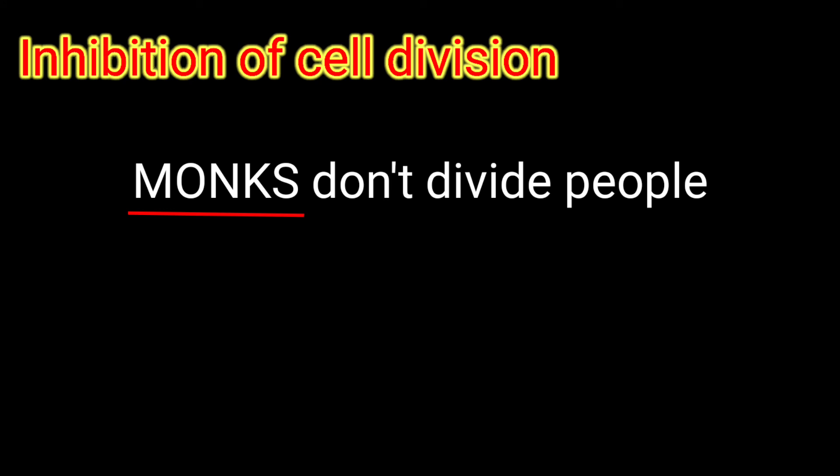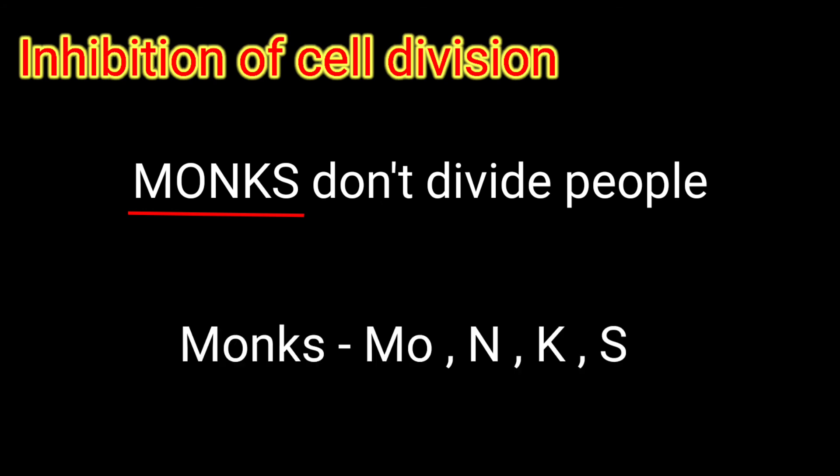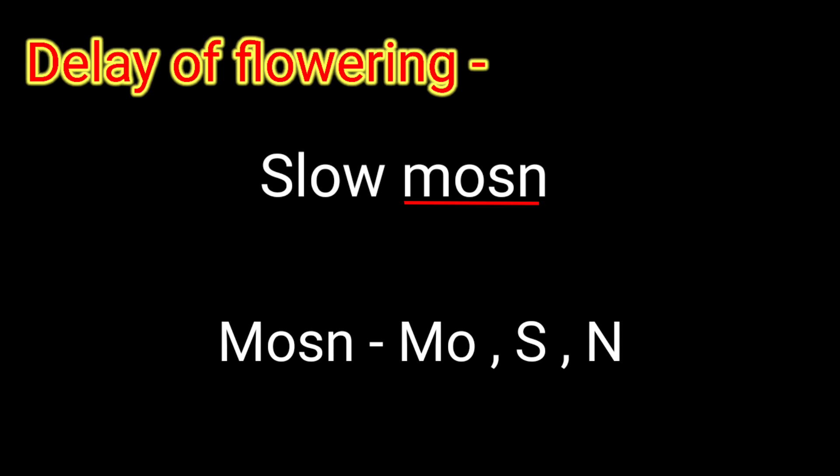Inhibition of cell division occurs due to the deficiency of molybdenum, nitrogen, potassium and sulfur. The trick is: 'Monks don't divide people.' In monks, M denotes molybdenum, N denotes nitrogen, K denotes potassium, and S denotes sulfur. Delay of flowering is due to the deficiency of molybdenum, sulfur and nitrogen. The trick is: 'Slow motion,' where MO denotes molybdenum, YES denotes sulfur, and N denotes nitrogen.